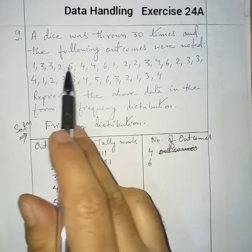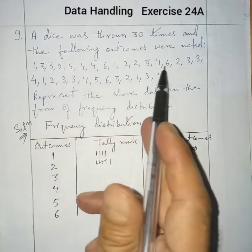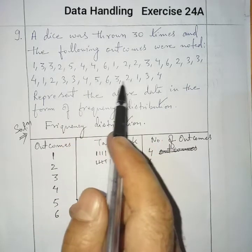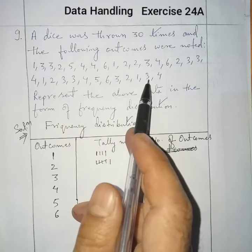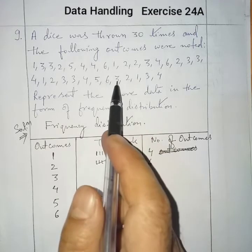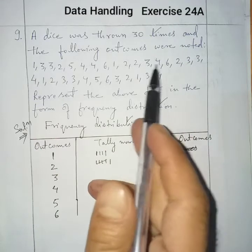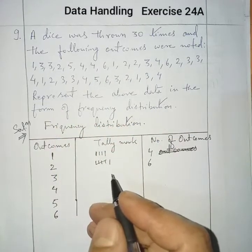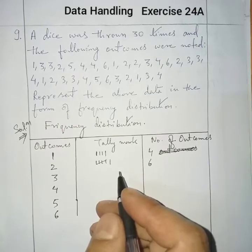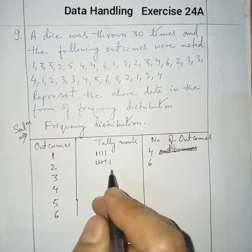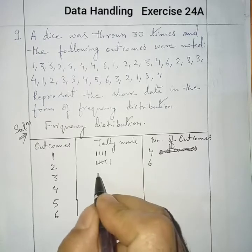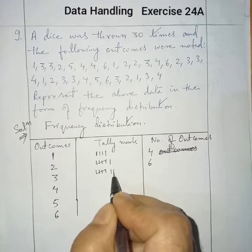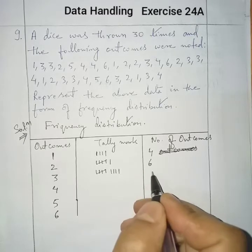Then for outcome 3, counting: 1, 2, 3, 4, 5, 6, 7, 8, 9. Let us count once again: 1, 2, 3, 4, 5, 6, 7, 8, 9. So there are 9 threes. The number of outcomes for 3 is 9.